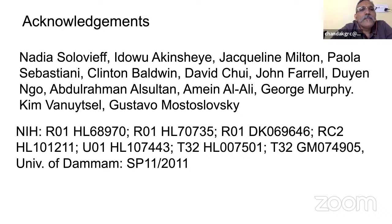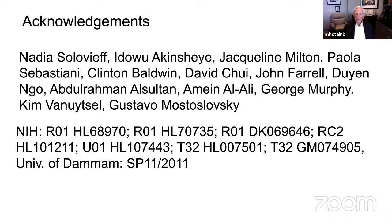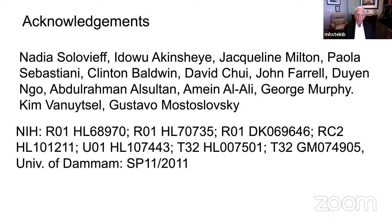Regarding hydroxyurea dosing: in India, many clinicians use no more than 10 mg/kg, whereas elsewhere starting doses go up to 30 mg/kg and maximum tolerated doses of 50–60 mg/kg. When using hydroxyurea you titrate the dose to get the desired effect. Some people can't tolerate higher doses; others will have very high fetal hemoglobin even at 10–15 mg/kg. Some patients require about 35 mg/kg and some don't even respond to that. The response is very heterogeneous.